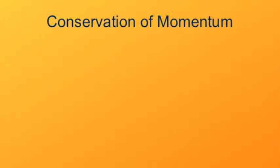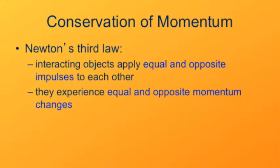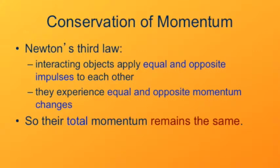Let's think now about systems of particles. By Newton's third law, whenever we have particles interacting, they apply equal and opposite impulses to each other. Thus, they experience equal and opposite momentum changes. Since their individual momentum changes are equal and opposite, the total momentum change of the system is zero. Thus, the total momentum of any system of interacting objects remains the same as long as there are no outside forces. So as long as all the interactions are within the system, momentum is conserved.